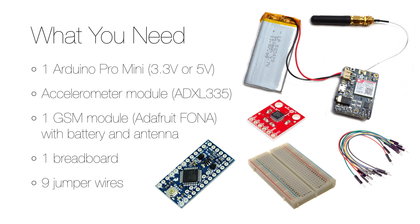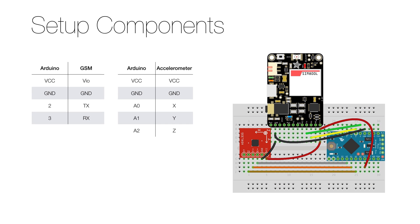To connect everything you need a breadboard and 9 jumper wires. To set up the hardware, you start by disconnecting everything from its power source and then connect the pins according to the table and diagram here. The GSM module connects just like in my previous video. The accelerometer module connects VCC and ground as usual, and then the Arduino A0 to X, A1 to Y and A2 to Z.